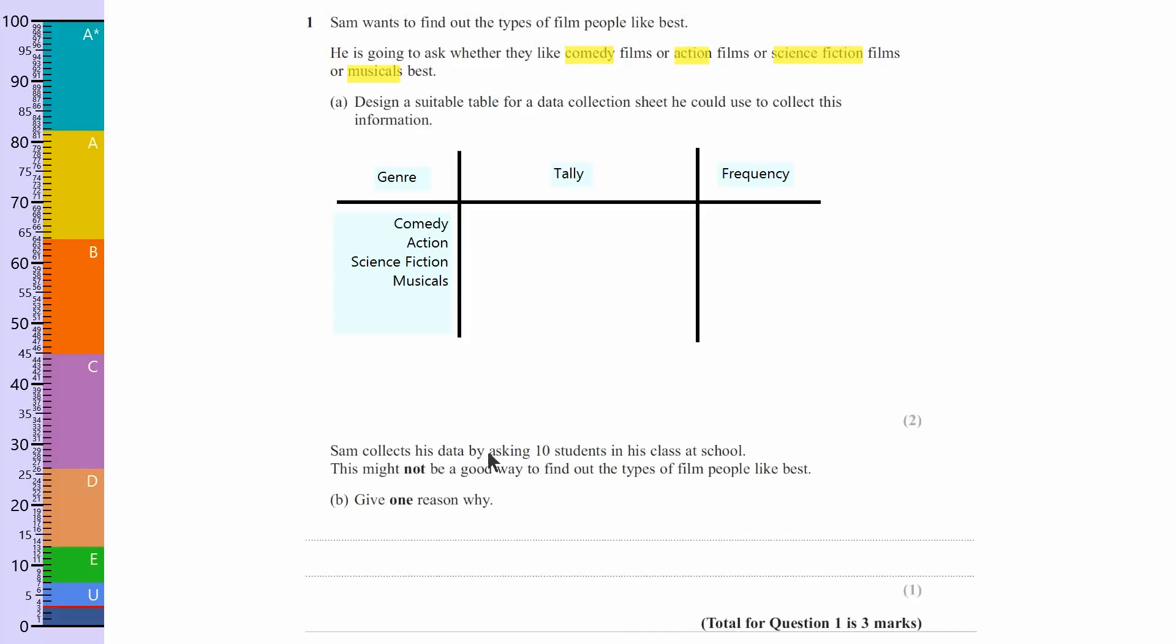Now this second question says that he collects the data by asking ten students in his class at school. This might not be a good way. Now the answer basically is in the question. He's only asking ten students. So we could say sample too small, and that would be enough to get the mark.